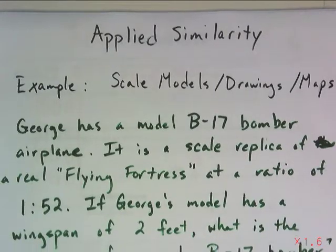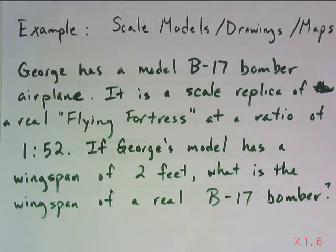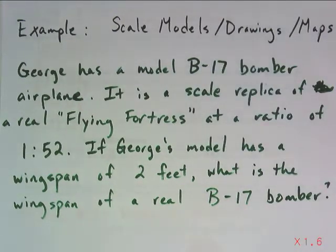For example, let's say George has a model B-17 bomber airplane. It's a scale replica of a real flying fortress, that's the name of the B-17 bomber, and the ratio is 1 to 52. If George's model has a wingspan of 2 feet, what is the wingspan of a real B-17 bomber?